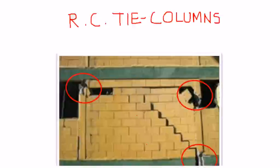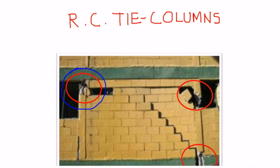Reinforced concrete tie columns are critical components of a confined masonry building. We would like to achieve good performance of these elements and to prevent, if possible, their failure in an earthquake. This photograph shows a confined masonry wall with tie columns which failed at the top and bottom locations due to a shearing failure of the confined masonry wall. One reason for their failure was that they were not properly reinforced.